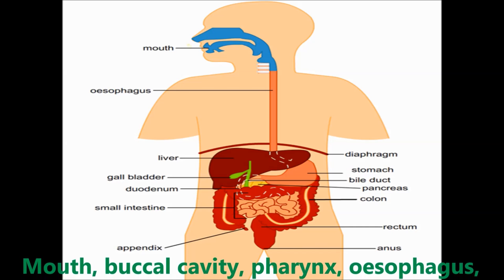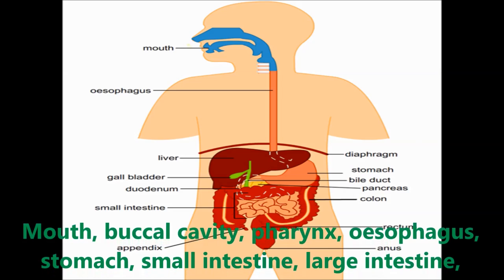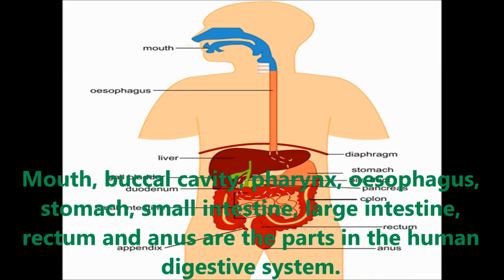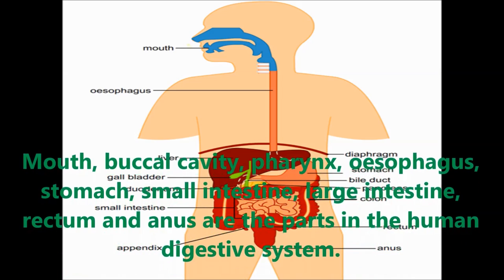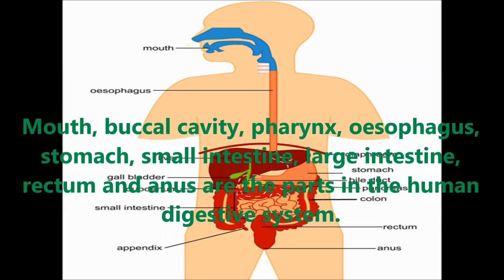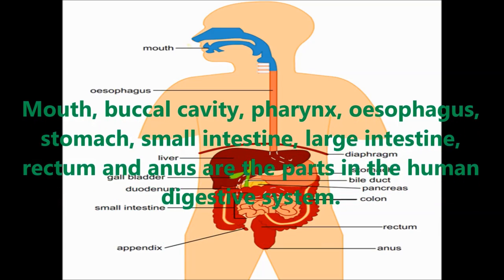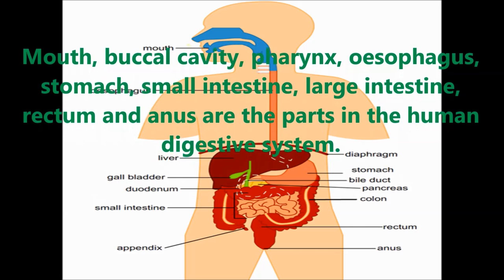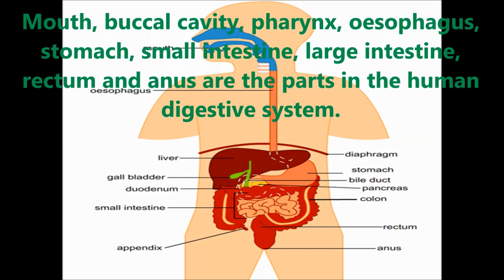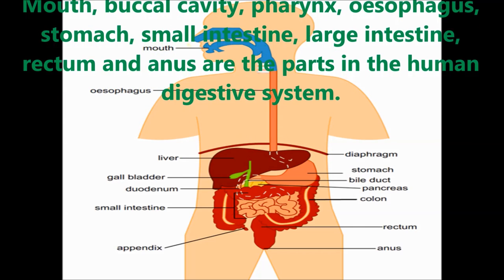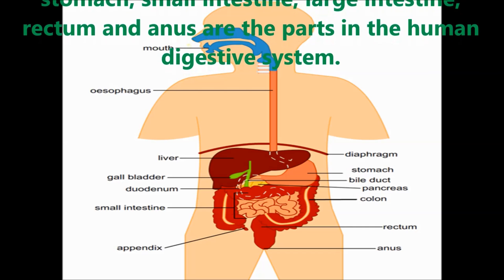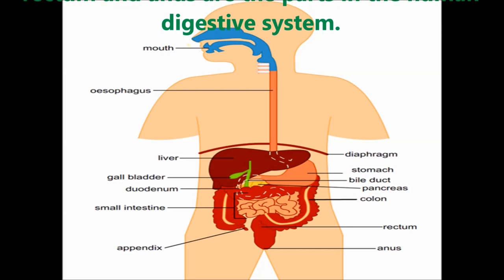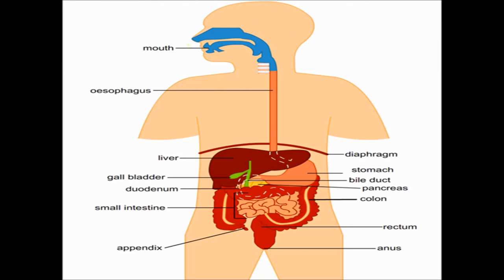Parts of the human digestive system. It consists of mouth, salivary glands, pharynx, esophagus, stomach, liver, gallbladder, bile duct, pancreas, duodenum, small intestine, large intestine, appendix, rectum and anus.